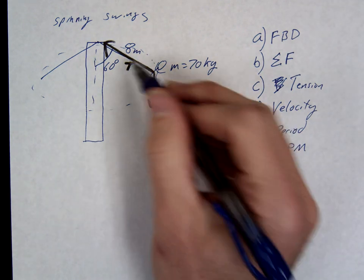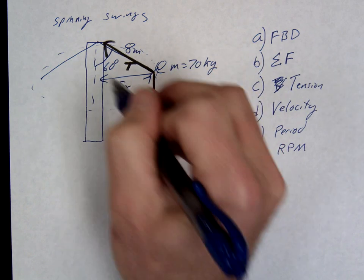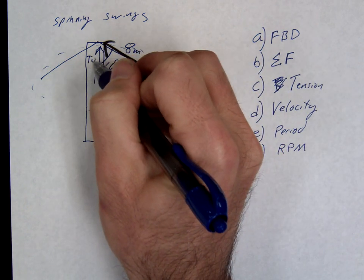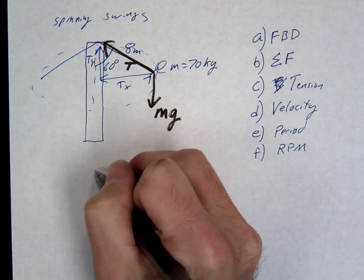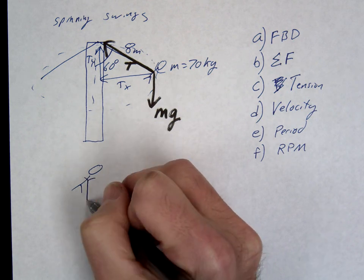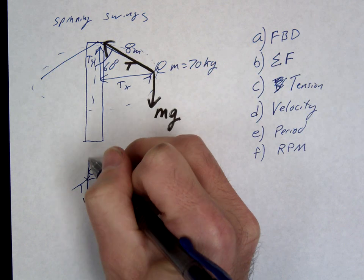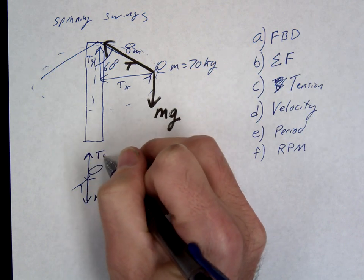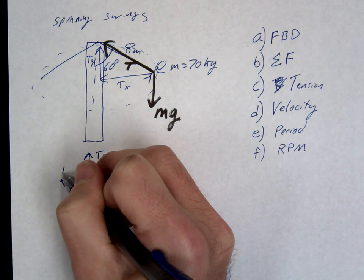So you're going to want to break down that tension into a horizontal Tx and a vertical Ty. So in other words, if I draw this picture with pure x's and y's, we have our mg down, we have our Ty up, and our Tx this way.